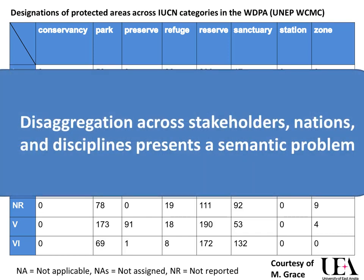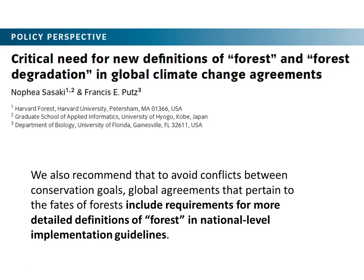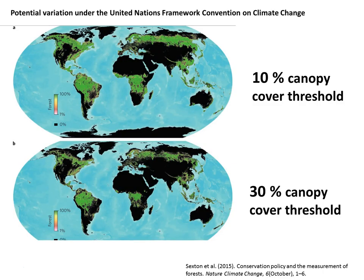So we have a situation where disaggregation of semantics across stakeholder groups, nations, regions, and disciplines creates a very variable space which we have to navigate if we want to connect data and information flows. And this is not just in the marine realm — this has been a problem in forestry for a very long time. There are hundreds of definitions of what a forest is, and therefore what forest degradation is, and it's really inhibiting our ability to report globally on change in forest coverage. Here we see a visualization of that: changing the threshold of canopy cover from 10% to 30% presents a very different worldview of the state of our global forests, which has implications for policymakers and the public. So semantics is a real issue when it comes to visualizing data and information.